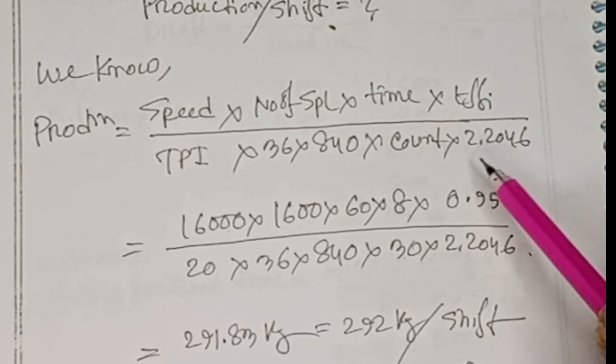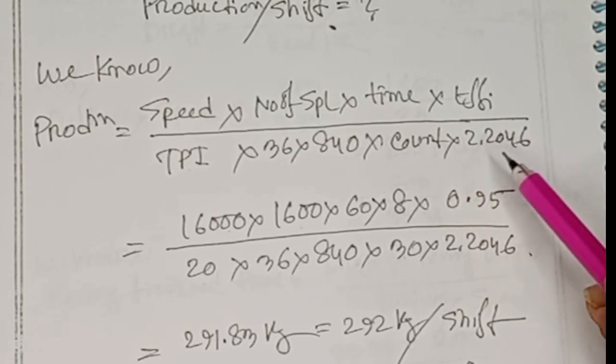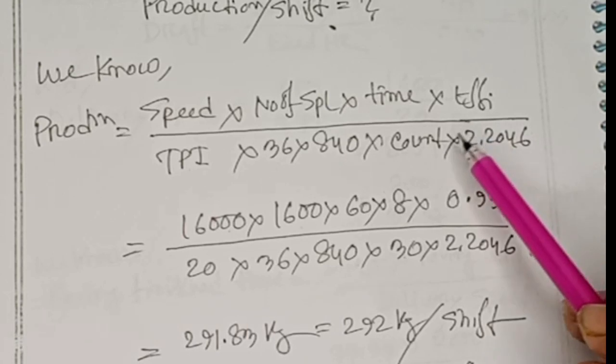If you include 2.2046, then the production will convert to kg per shift. Otherwise, the production will convert to pounds only.